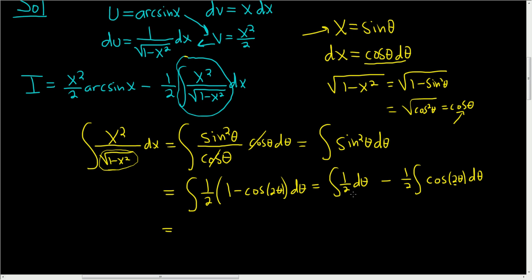So this is equal to, to integrate this one, it's 1 half theta, and then minus, now we're dividing this by 2, so we're going to get minus 1 fourth sine of 2 theta plus c.